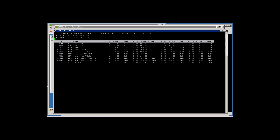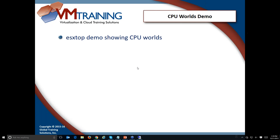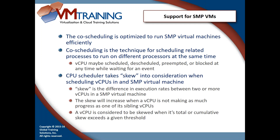The next topic is support for multi-virtual CPU VMs, or SMP — symmetric multiprocessing. It's the VMkernel's responsibility to schedule virtual CPUs to physical CPUs on the ESXi host. Co-scheduling is optimized to run these multi-virtual CPU VMs efficiently. Co-scheduling is the technique for scheduling related processes to run on different physical processors at the same time. A virtual CPU may be scheduled, descheduled, preempted, or blocked while waiting for a certain event.